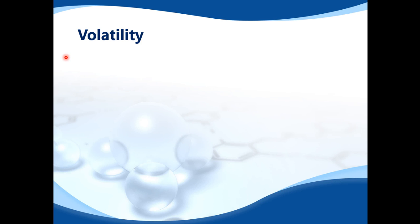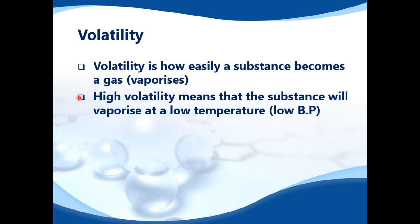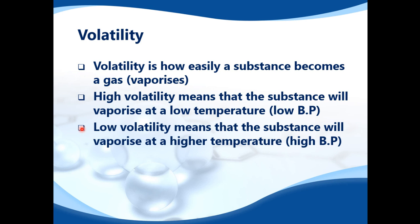Let's talk about volatility. What is volatility? Volatility is how easily a substance becomes a gas — that means how easily it vaporizes. Vaporize means it becomes a vapor, which is a gas, so we're going from liquid to a gas. High volatility means that the substance will vaporize at a low temperature, which means a low boiling point. A low volatility means that the substance will vaporize at a higher temperature, or a higher boiling point.